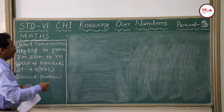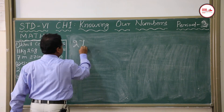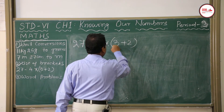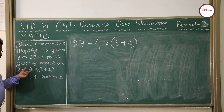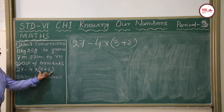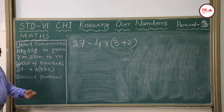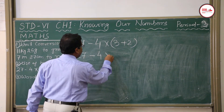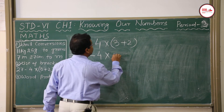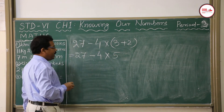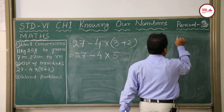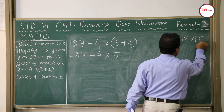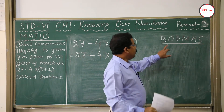Consider the problem: 27 − 4 × (3 + 2). We give priority to brackets first. Operations inside the bracket are done first: 3 + 2 = 5. Now apply BODMAS — B, O, D, M, A, S.